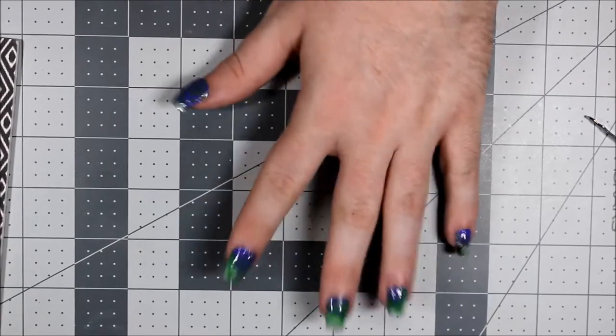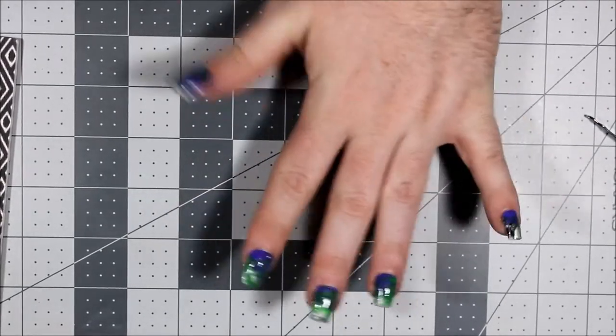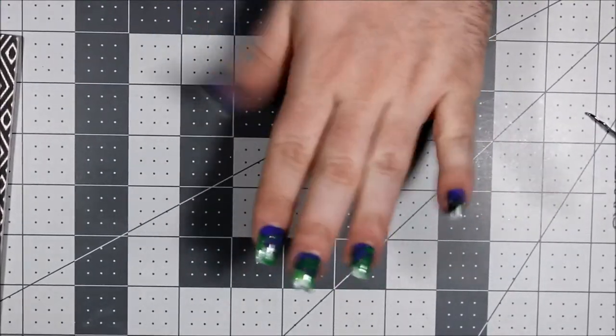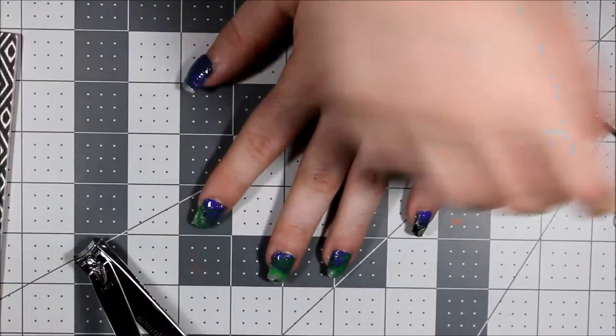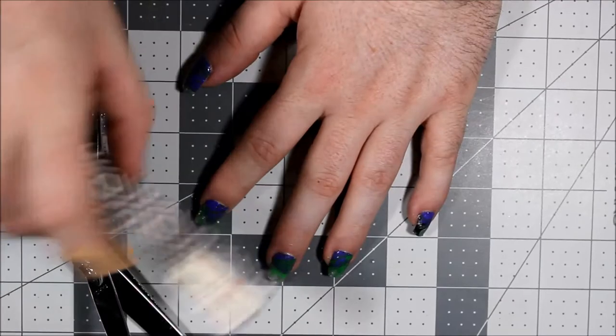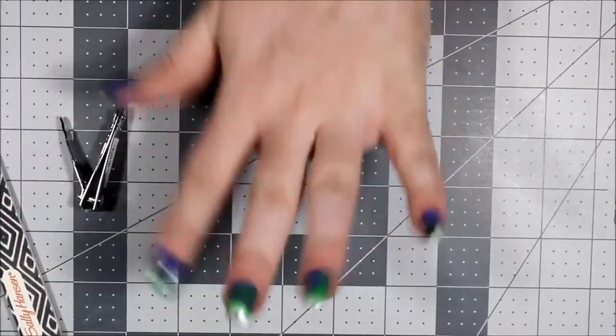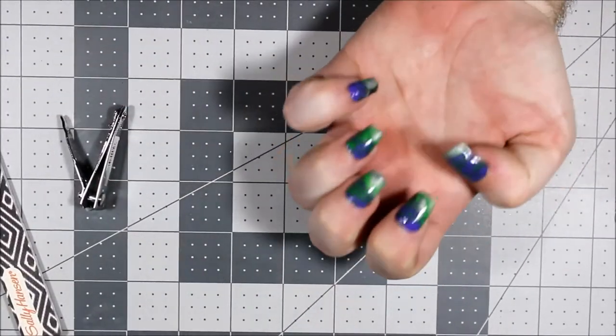Okay, so now that the nails are on, all the glue is dry, the little clear polish top coat on top is done, everything's done, we're just going to see how these hold up to trimming and filing. So I'm going to mess these up a bit and we're going to report back and see what happens.